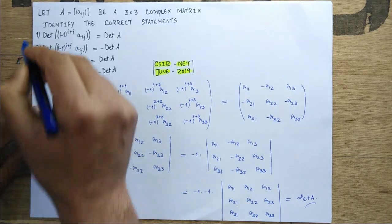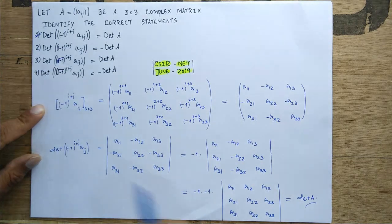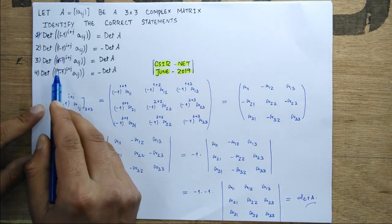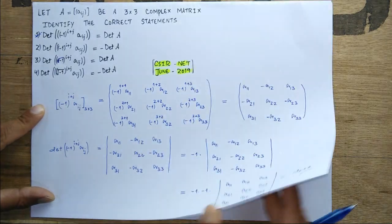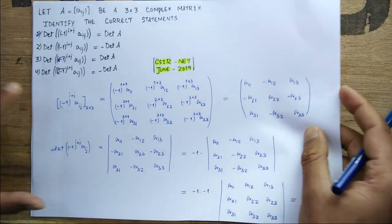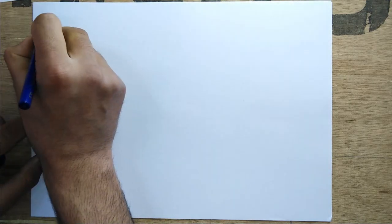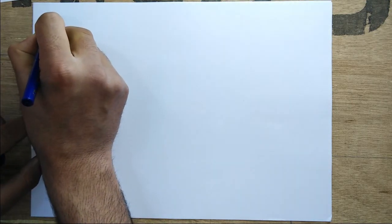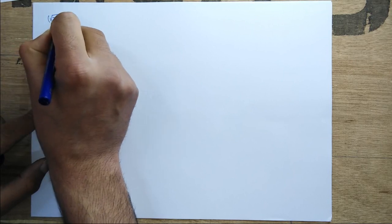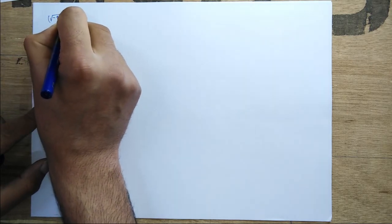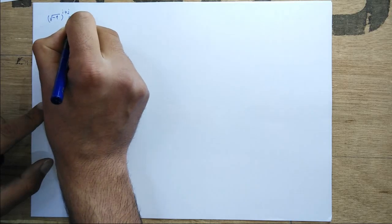So option number one is correct and option number two is incorrect. Now let's check what will happen to the other matrix, which is defined as (√-1)^(i+j) * a_ij.